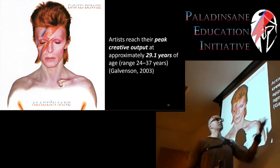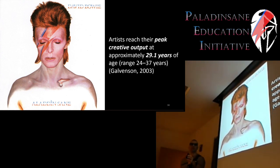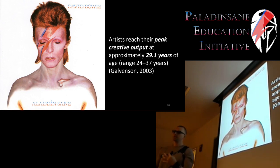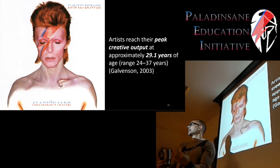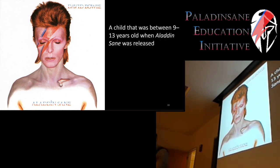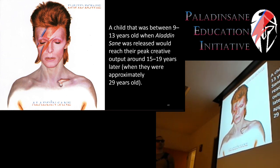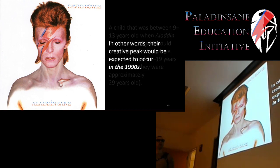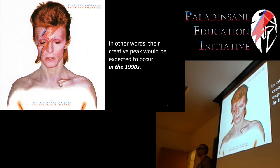Artists actually reach their creative peak output at approximately 29.1 years of age — a really interesting study by Galvinson looked at when artists made their most influential work, when they got their first solo New York show, and from what period of their life textbook pictures are drawn. It turns out they're mostly from their early twenties until their late thirties. So a child who was nine to 13 years old when Aladdin Sane was released in 1973 would reach their peak creative output 15 to 19 years later — in the 1990s.